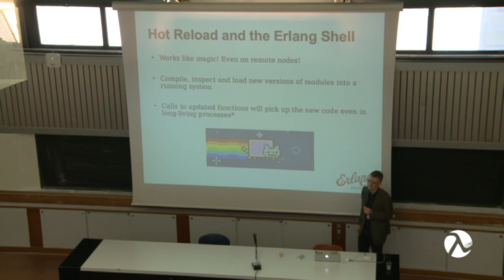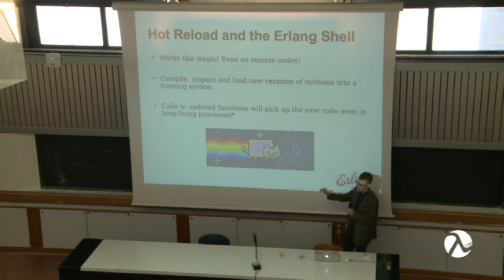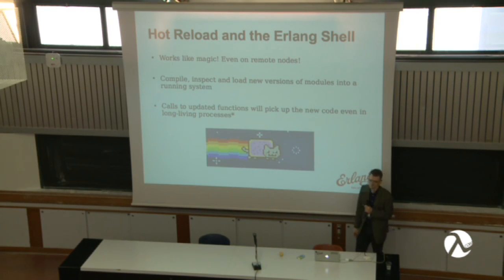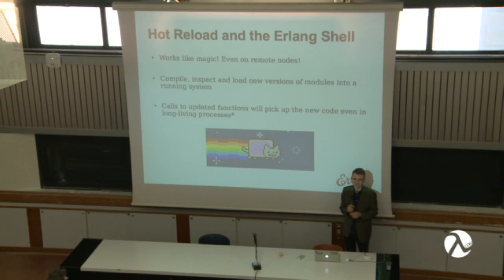As a deployment strategy, hot code reload is a horror — you don't know what version of the release you're running if you just deploy one module. The OTP system has release and relup files where you can script precisely the way you want to release and maybe roll back. This is the black magic I was talking about: it's a DSL written in Erlang tuples, it's complex, and no one really knows how to make it work nicely. Most people just use a load balancer and flip the nodes one by one. Thank you very much.